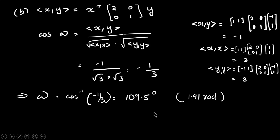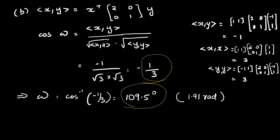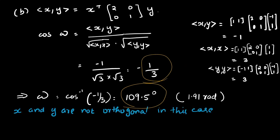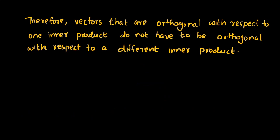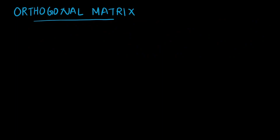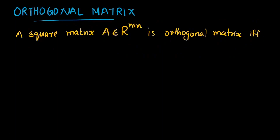So what happens here: in the previous case, using the dot product as the inner product, we found x and y are perpendicular. But when we change the inner product, we cannot say these two vectors are perpendicular, because the inner product is not equal to zero. So orthogonality must be stated with respect to the inner product being used. Therefore, vectors that are orthogonal with respect to one inner product do not have to be orthogonal with respect to a different inner product.